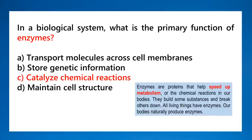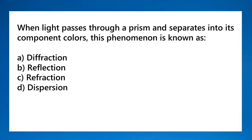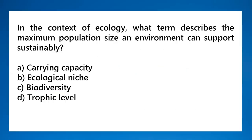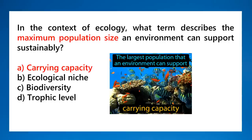When light passes through a prism and separates into component colors, this phenomenon is known as dispersion — dispersion of white light into ROYGBIV: red, orange, yellow, green, blue, indigo, and violet. In the context of ecology, the term that describes the maximum population size an environment can sustainably support is called carrying capacity.